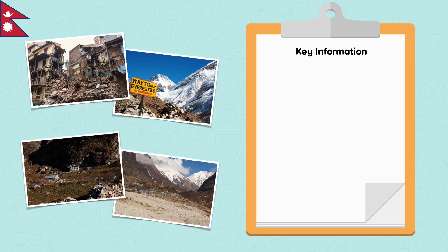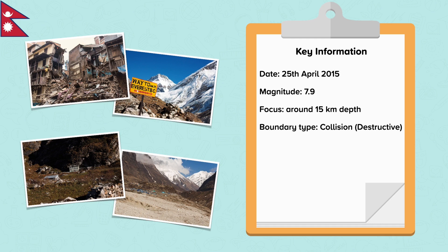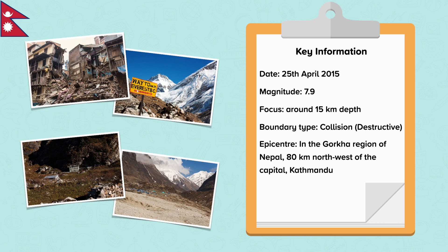The Gorkha earthquake in Nepal took place on the 25th of April 2015. It was a strong earthquake with a magnitude of 7.9. Its focus, where the earthquake originates, was only 15km in depth, meaning this was a shallow earthquake. The boundary type was a collision plate boundary, or converging plate boundary, where the Eurasian plate meets the Indian plate. The epicentre — the point on the surface above the focus — was in the Gorkha region of Nepal, 80km northwest of the capital Kathmandu, where the majority of damage occurred.